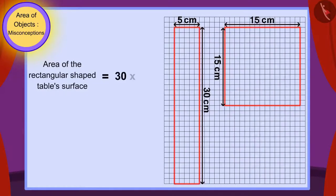There are 150 squares in the surface of the rectangle-shaped table. Or, the area of the rectangular table surface is 150 square centimeters.